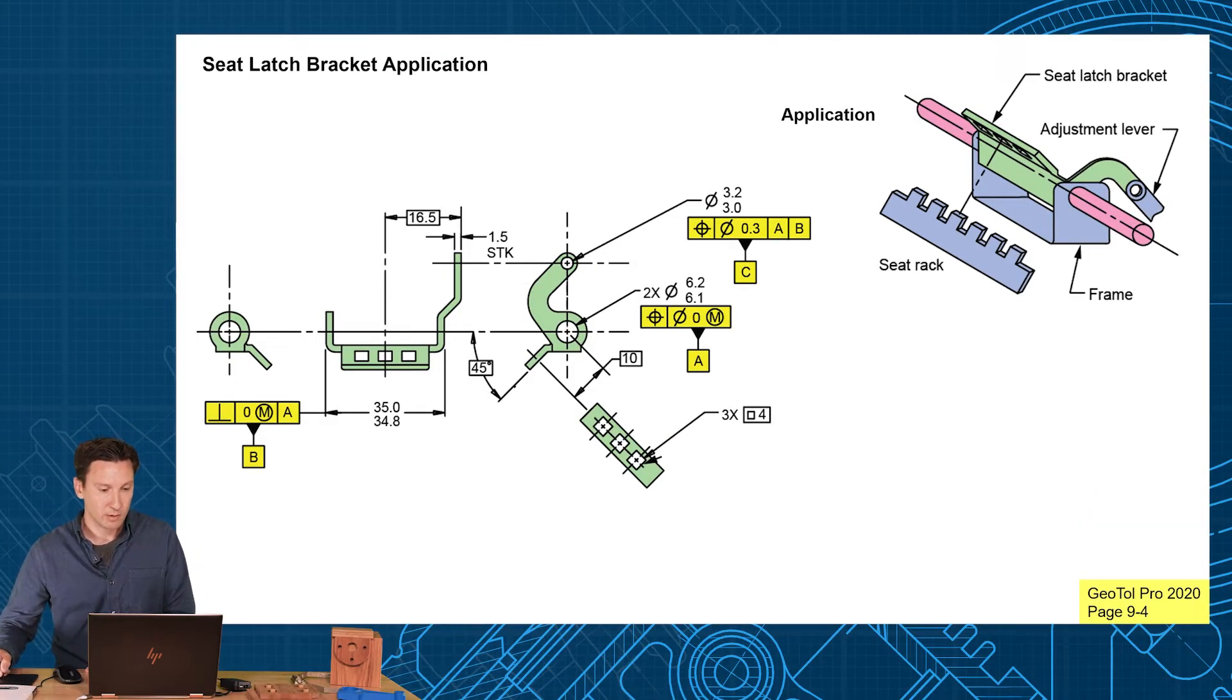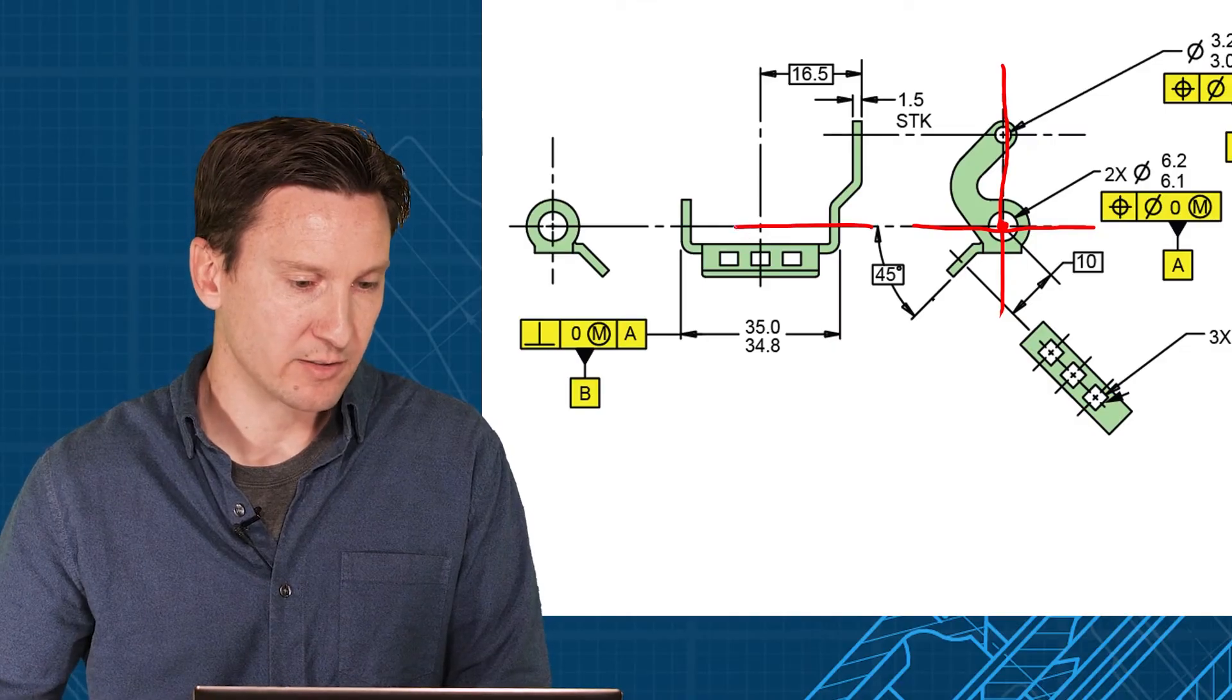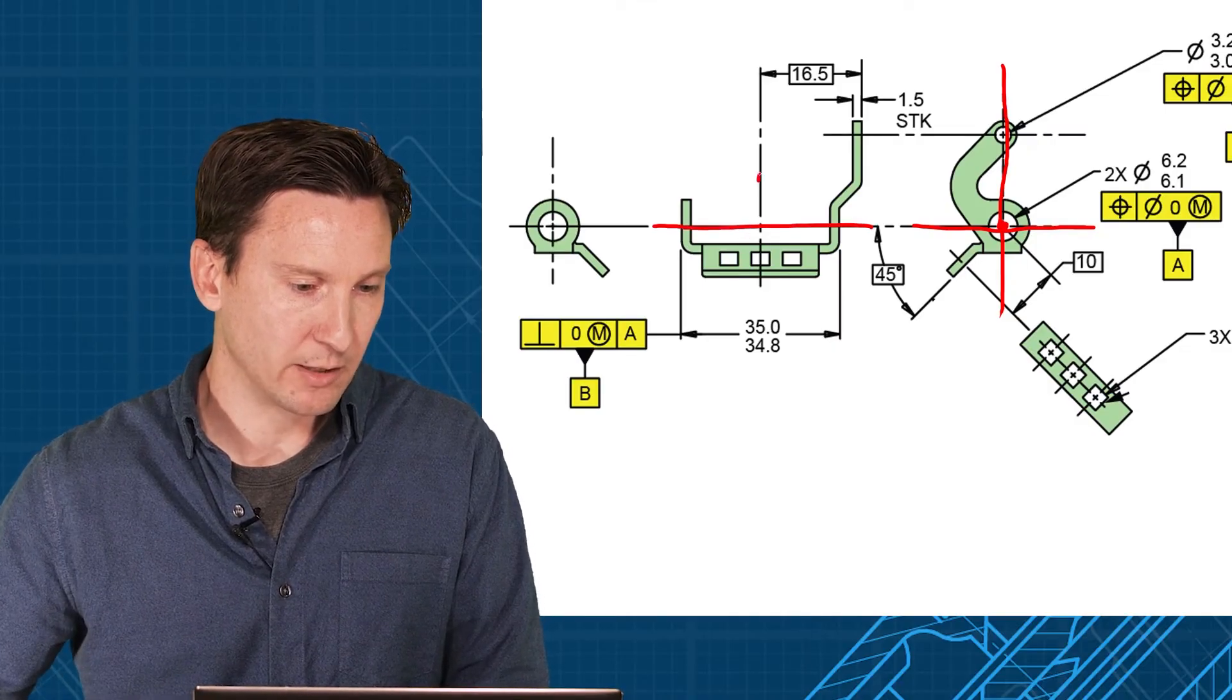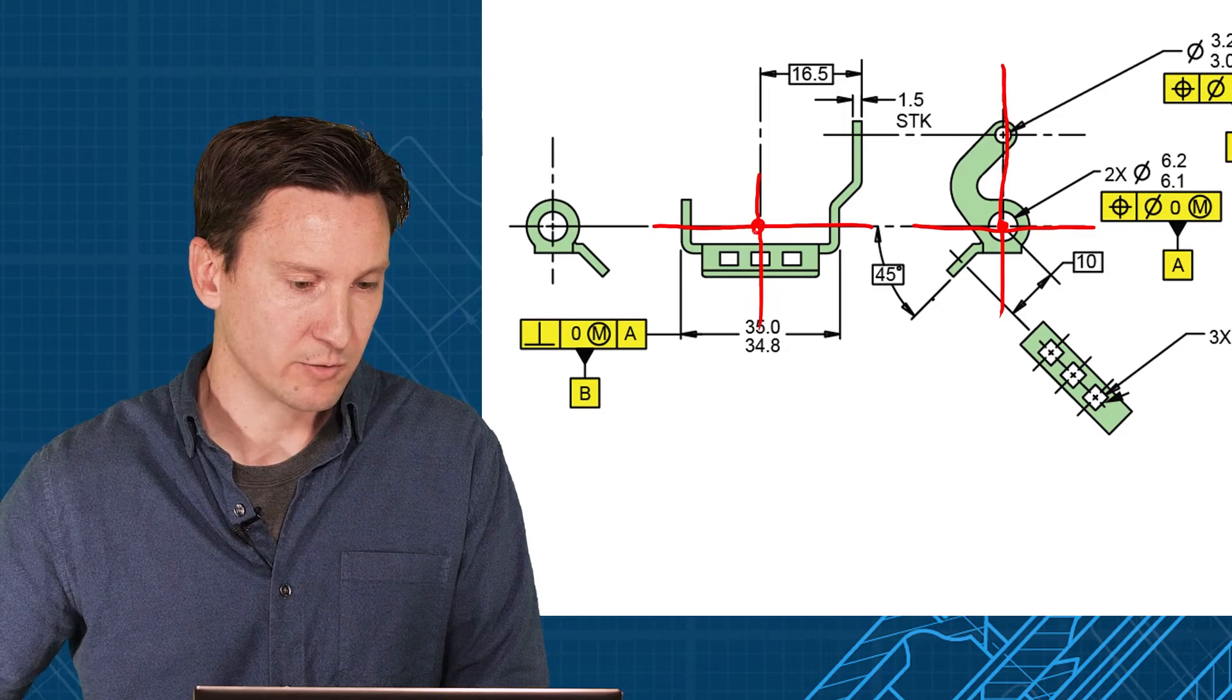So in this case, we're going to pivot about that primary axis. We're going to align rotationally with this hole here, C. And that sets up our datum reference frame. In this view, we have our axis as A and that center plane as B. That's our datum reference frame.